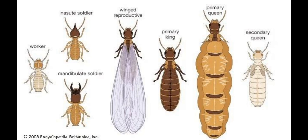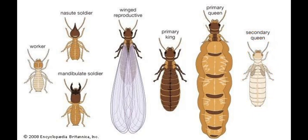When a colony gets very big, it produces so-called alates — winged insects that fly and establish a new colony, both female and male. Also some secondary queens appear, and interestingly, secondary queens are fed by workers only with saliva, so they cannot digest wood.